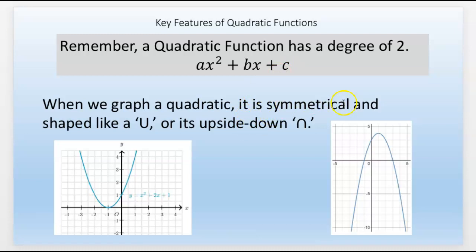When we graph a quadratic, it's symmetrical and it's shaped like a u or an upside down u. It can be that if the a is negative. It can be upside down.